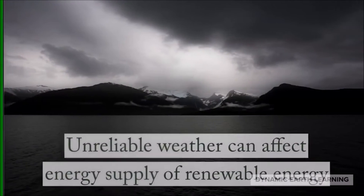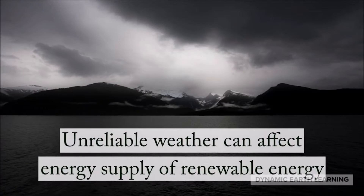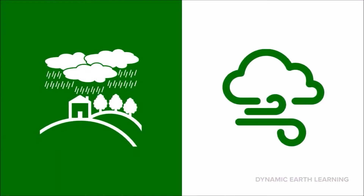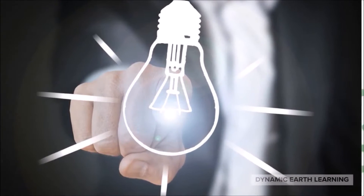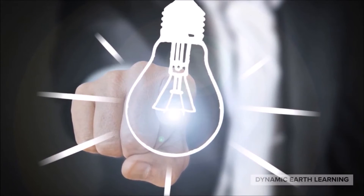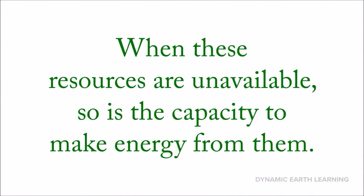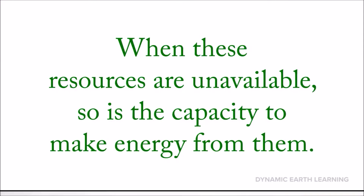Additionally, unreliable weather can affect the energy supply of renewable energy. Some days may be windier than others, the sun doesn't shine at night, and droughts may occur for periods of time. There can be unpredictable weather events that disrupt these technologies. When these resources are unavailable, so is the capacity to make energy from them.